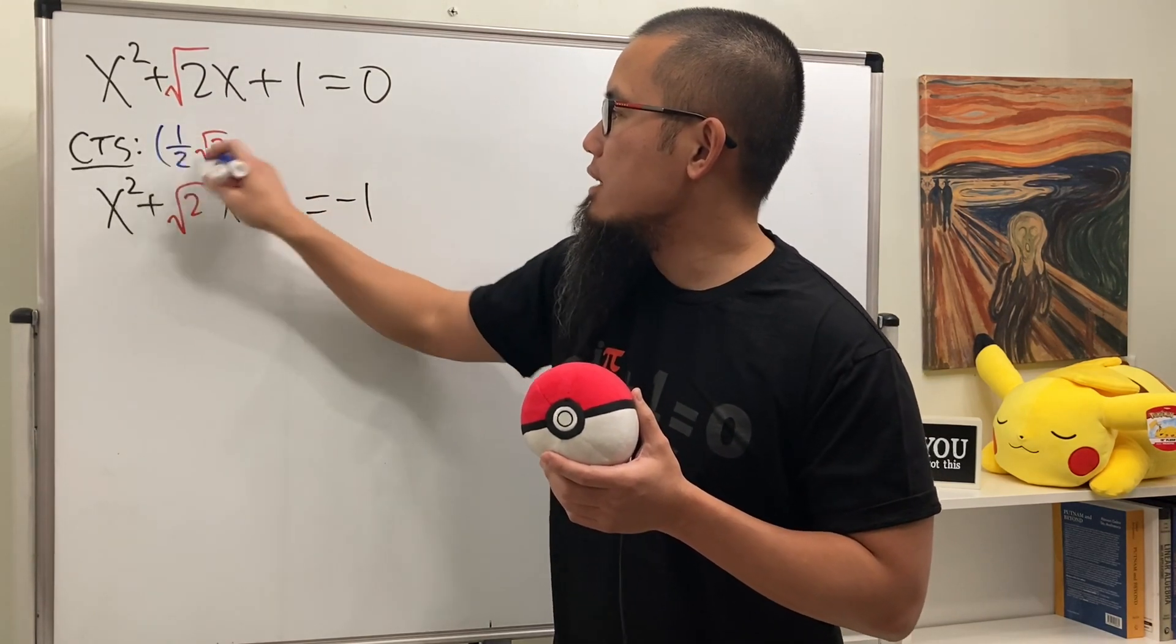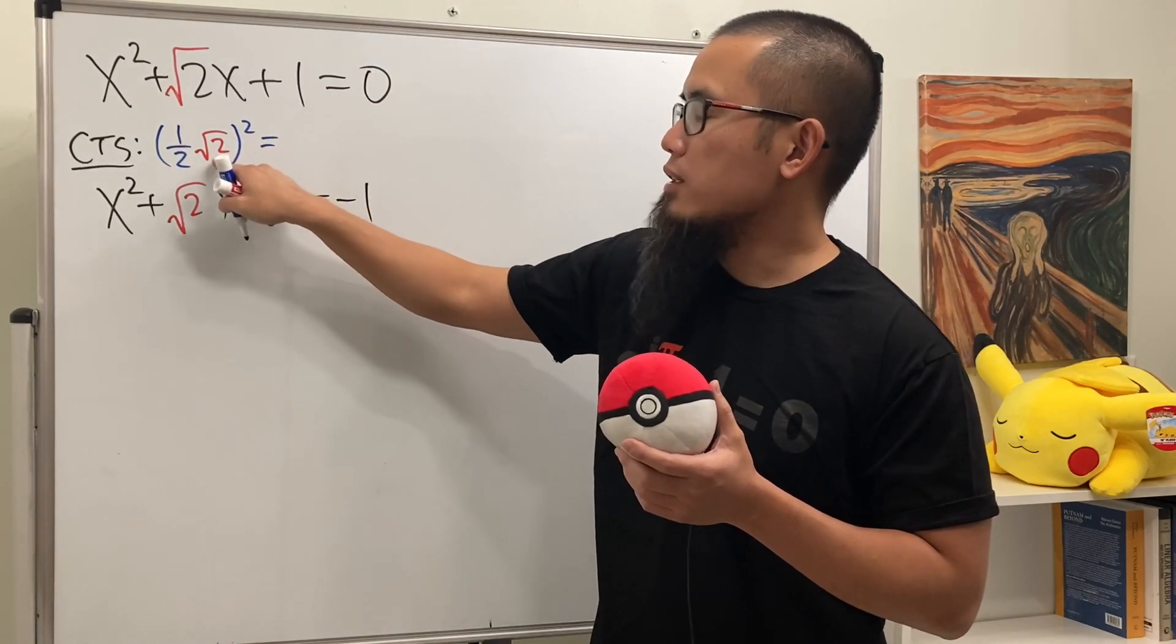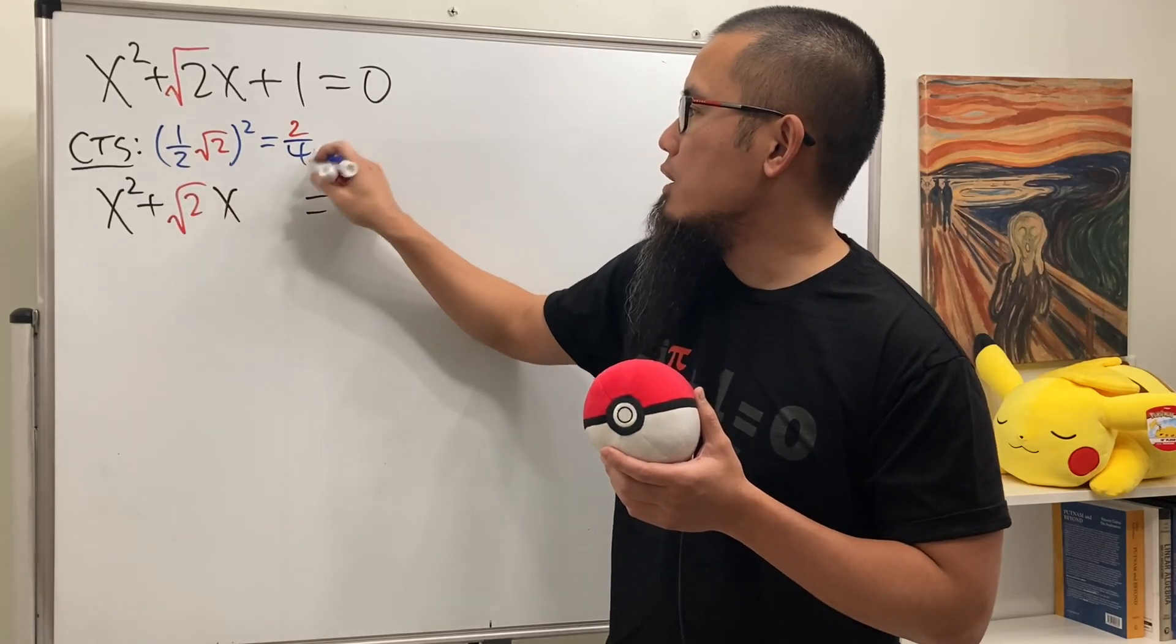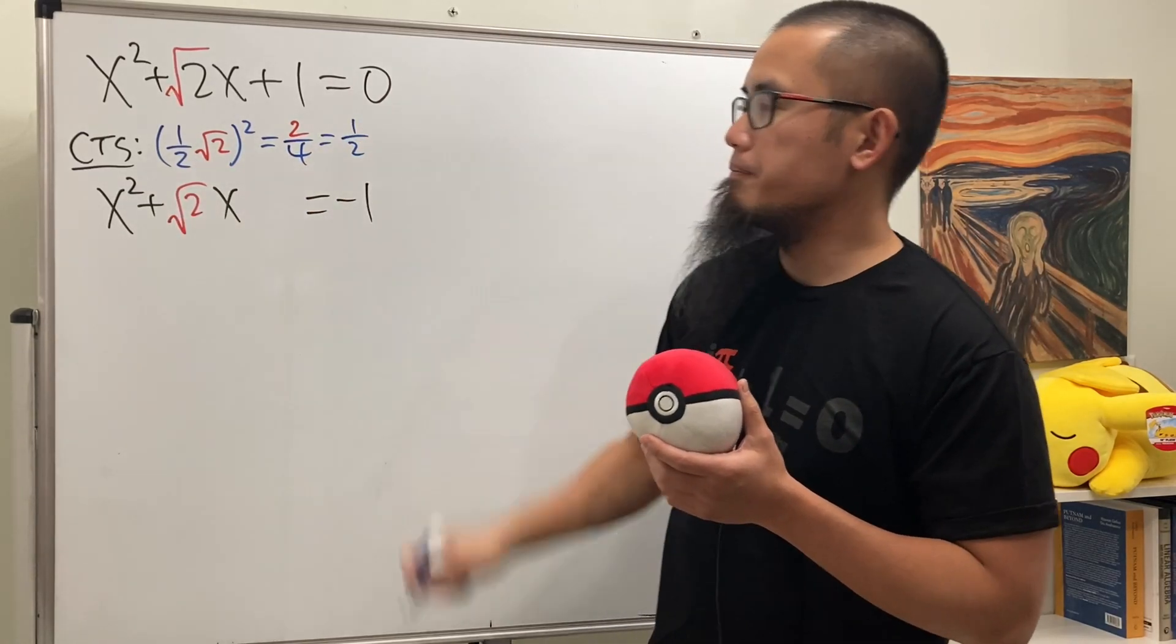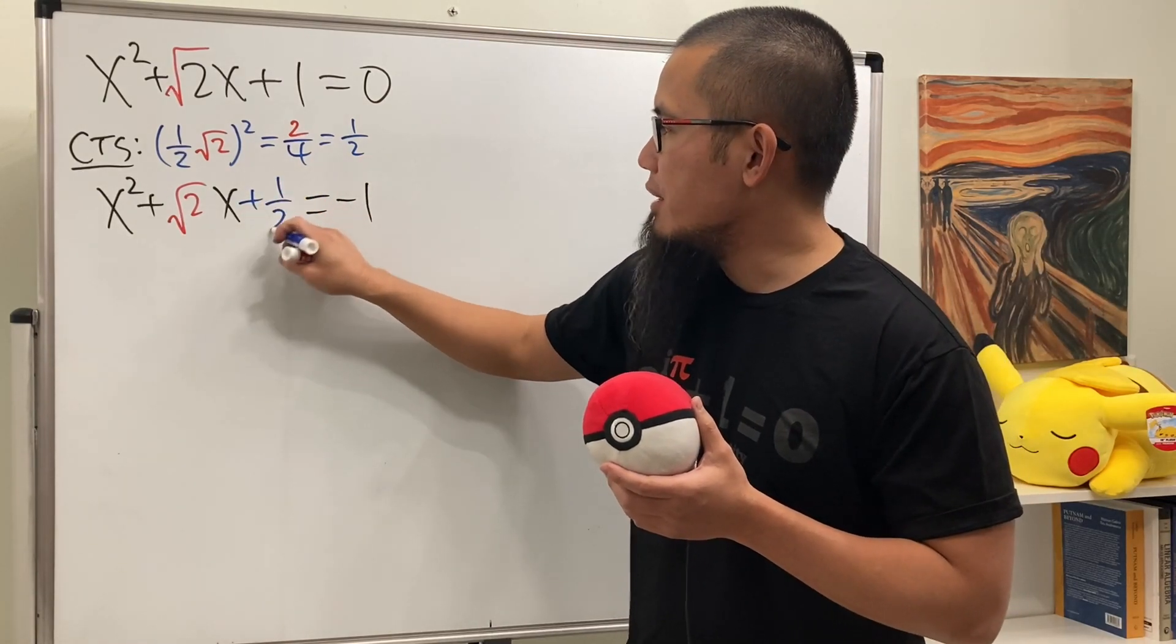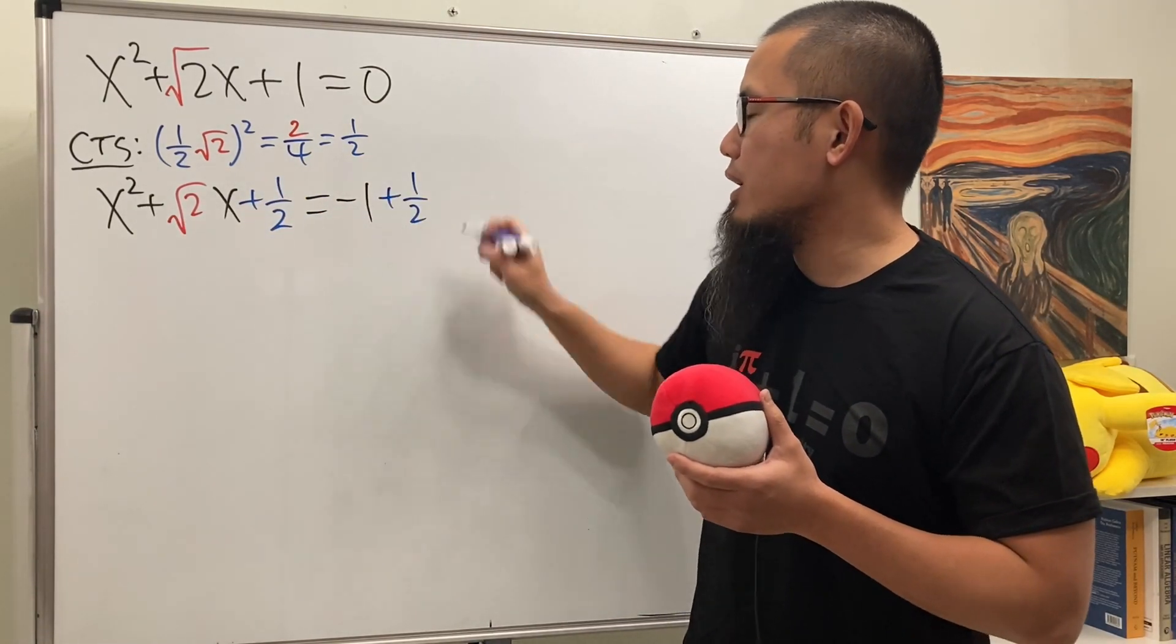And then square this. And you see, when you square the square root of 2, it's just 2. And when you square the 2, you get 4. So all in all, we get 1 over 2. Cool. This is going to be added right here. And likewise, we have to do that on the right-hand side as well.